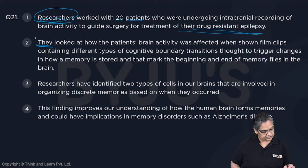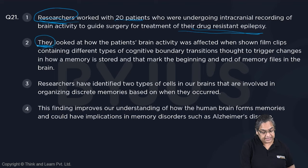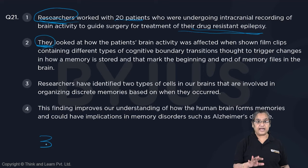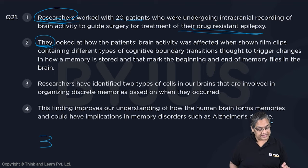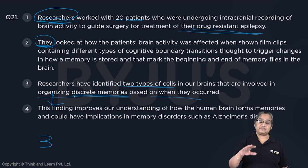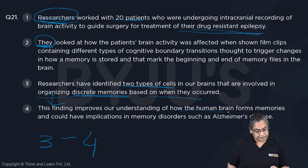So 'they' obviously refers to the researchers. They looked at how the patient's brain activity was affected when shown film clips consisting of different types of cognitive boundary transitions. So sentences 1 and 2 could be a nice link. Sentence 3: Researchers have identified two types of cells in our brains that are involved in organizing discrete memories based on when they occurred. Sentence 4: This finding improves our understanding of how human brains form memories.